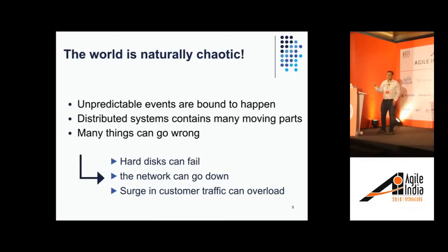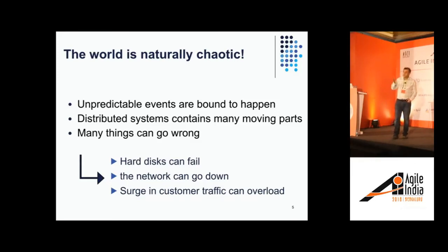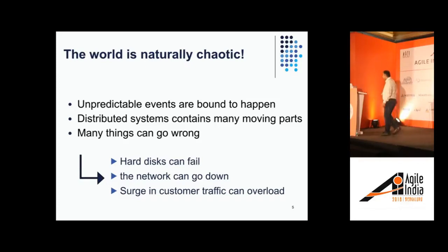The problem is that the world is chaotic. We are operating at a large scale — deploying applications on AWS, Google Cloud, Azure, whatever your cloud environment is — and things fail at scale. There are many moving parts in a distributed system; disk storage, networks, things can go wrong. Hard disks fail, networks go down, etc. The point is the world is naturally chaotic, and there is no way to actually prevent that chaos from happening. But what you can do is be prepared for it and know what to do when it actually happens.